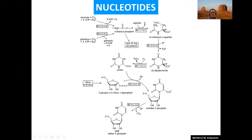Once you make carbamoyl phosphate, you bring in aspartate and make carbamoyl aspartate, which is ready to be cyclized into dihydroorotate. Then, after a few steps — there's a redox reaction — and then incorporation of PRPP, and finally decarboxylation to get rid of the carboxyl group of aspartate to give you UMP.